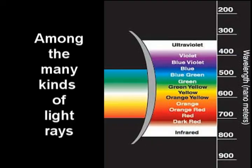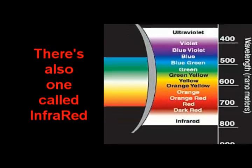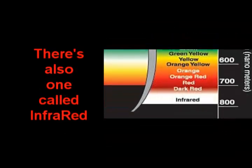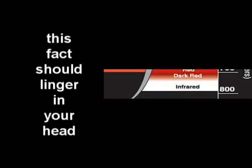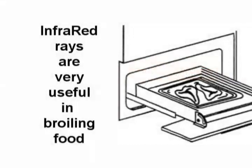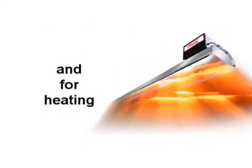Among the many kinds of light rays, there's also one called infrared. And when you're thinking of this light ray, this fact should linger in your head: Infrared rays are very useful in broiling food and for heating.